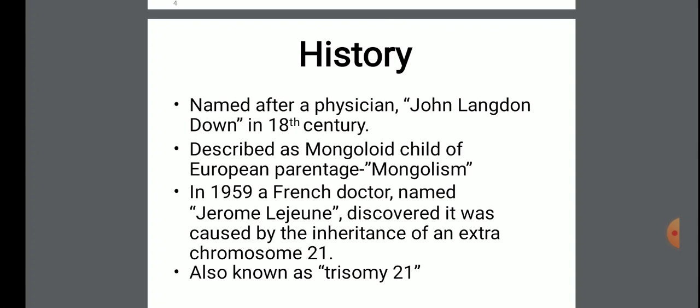The history of Down syndrome: it is named after the physician John Langdon Downe in the 18th century. In 1959, a French doctor named Jerome Lejeune discovered it was caused by the inheritance of an extra chromosome 21, and is also known as Trisomy 21.